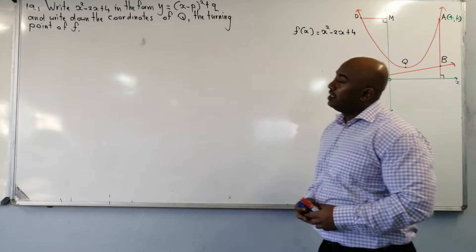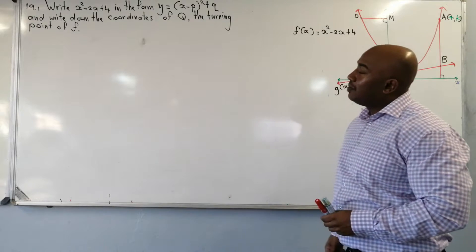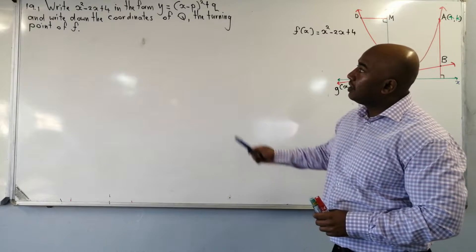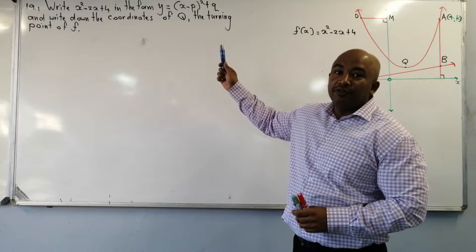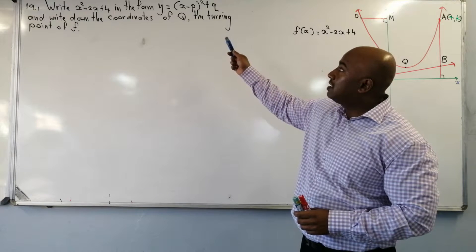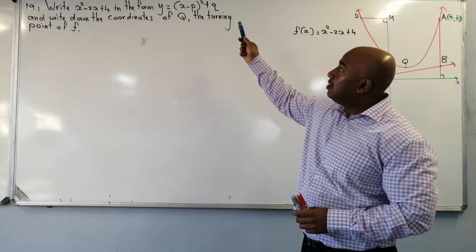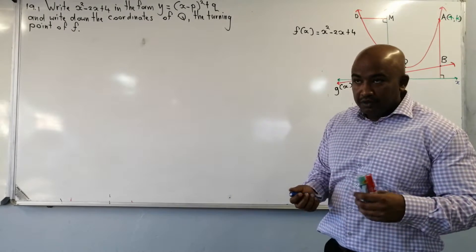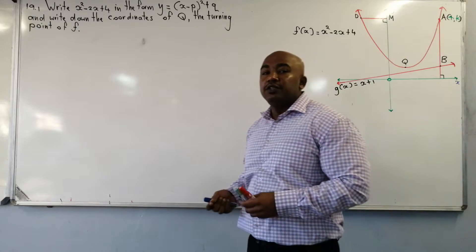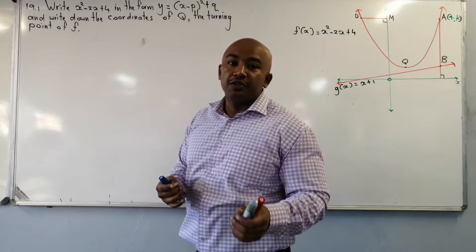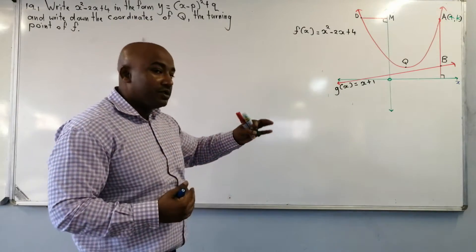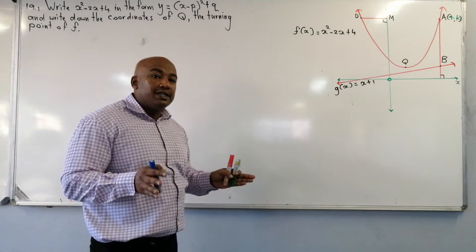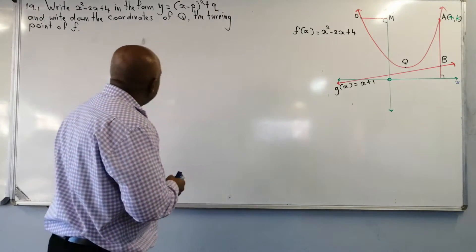The first question here is: write x squared minus 2x plus 4 in the form y equals x minus p, all squared plus q. What skills do you need in order to do that? You need to go back to chapter 4 — completing the square.